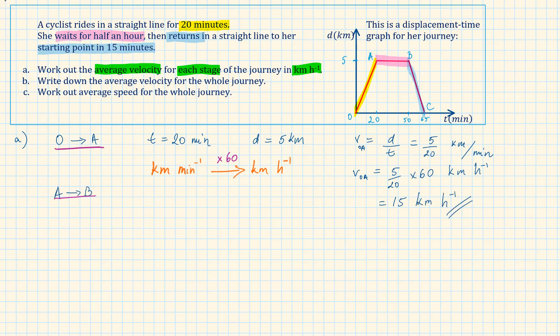The journey from A to B is stationary. Displacement 0. Velocity 0.